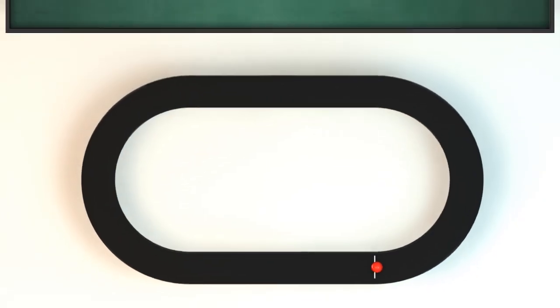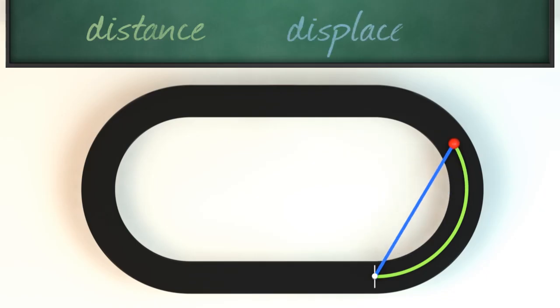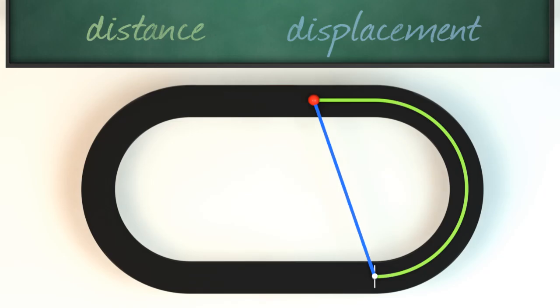Imagine a runner going around a track. As the runner goes around, the total distance is simply the length of ground the runner has covered, and is shown here in green. The total displacement is the straight line change in position from where the runner started, shown in blue. We don't need to show the exact numbers here, it's just the length of the lines that matter.